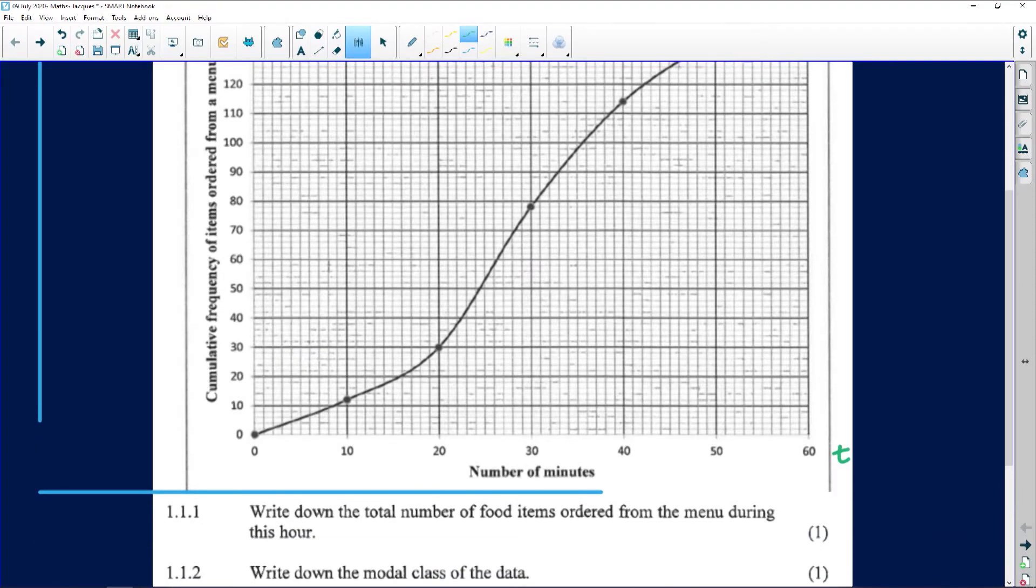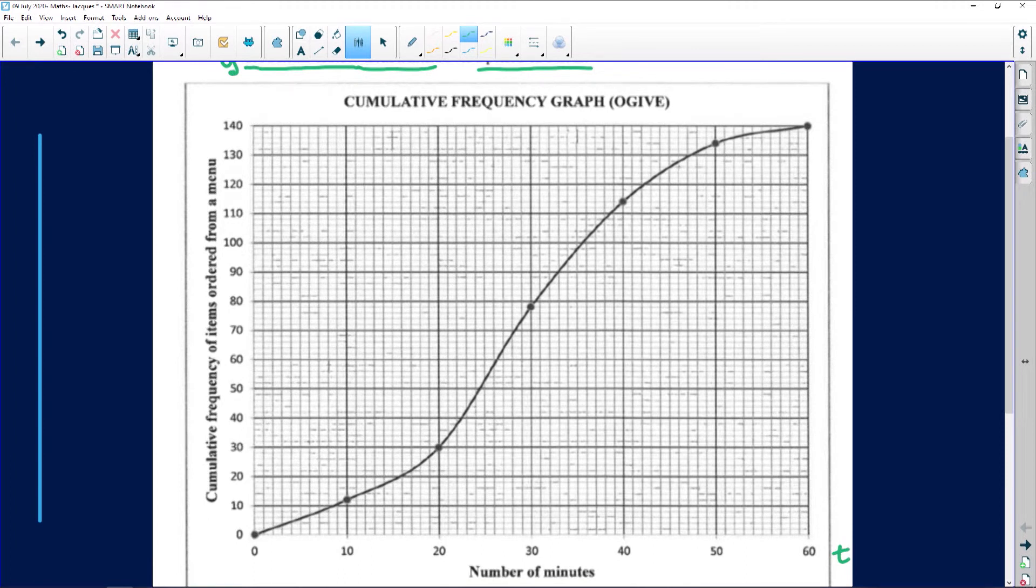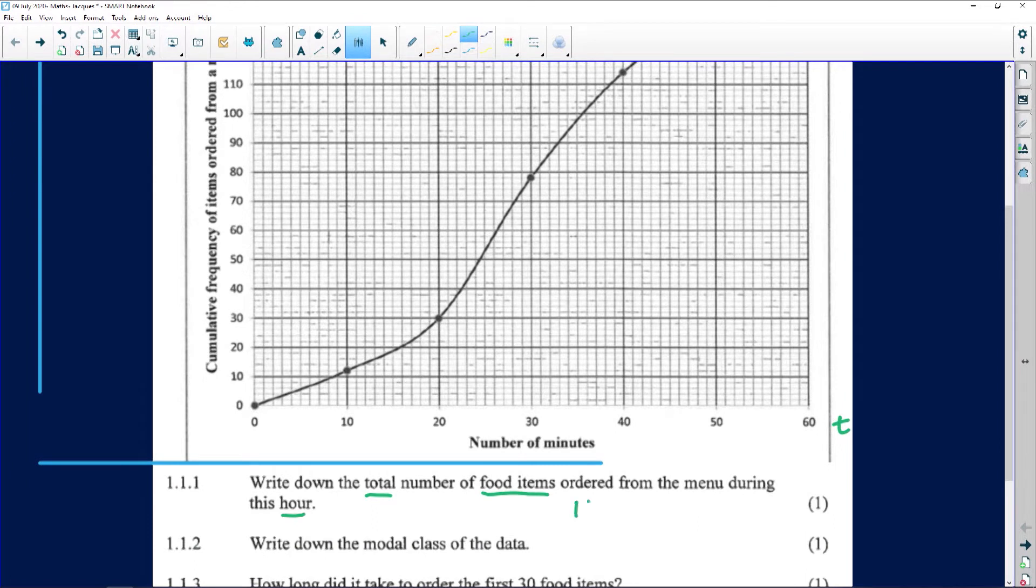And that is our first question. Look at what they're asking us. They say, write down the total number of food items ordered from the menu in this hour. Now folks, the hour started at 0, it finished at 60, the cumulative frequency is what's lying on the vertical axis. So that represents the total number of items ordered, and you can see it finishes right here at the top with 140 items. So I'm just going to answer that here. This is 140 items for one mark.